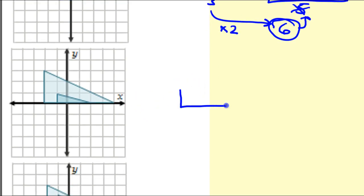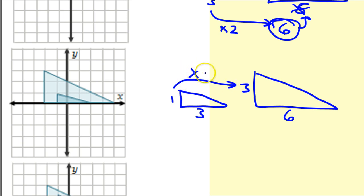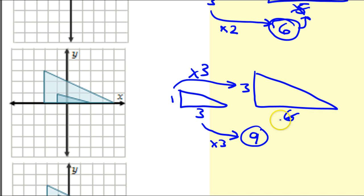Let's do it again. Small triangle, big triangle. The small triangle here is 1 and 3. And the big triangle is 3 and 6. If I look at these lengths, the scale factor would have to be 3. 1 times 3 is 3. So if I use the same scale factor for the horizontal piece, again multiplying by 3, I should get 9. But what I see instead is 6. So this is not a dilation either.